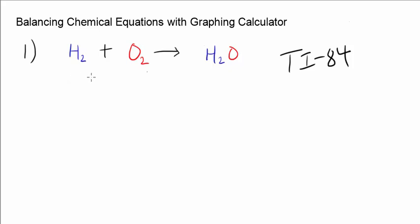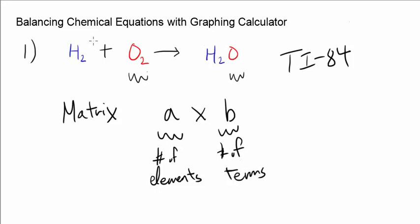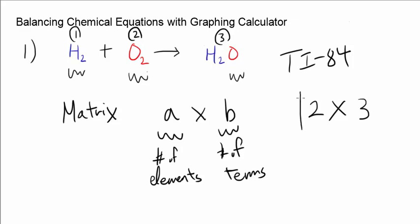Let's look at our first equation. We have H2 plus O2 producing H2O. This equation is not balanced because you have two oxygens on one side but only one oxygen on the other side. To balance it using a calculator, you need to generate a matrix — an A by B matrix where A is the number of elements and B is the number of terms. Here we have two elements (hydrogen and oxygen) and three terms (H2, O2, and H2O), so we make a 2 by 3 matrix.